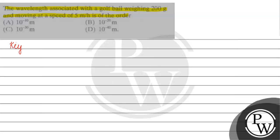The key concept for this question is wavelength equals H by MV, where H is the Planck constant, M is the mass of the particle, and V is the velocity of the particle.